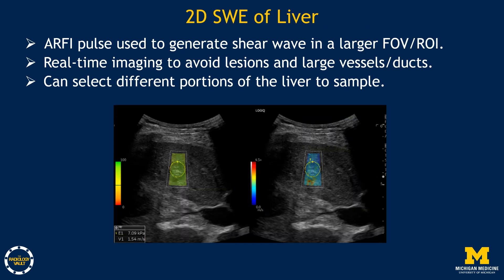For 2D shear wave elastography of liver, we use a similar technique in a larger field of view and region of interest. We have real-time imaging to avoid lesions and large vessels and bile ducts, and the sonographer can select different portions of liver to sample. Quality map is an important feature of 2D shear wave elastography in the latest versions of ultrasound machines. It can be used to assess the quality of measurements, motion, or other artifacts.